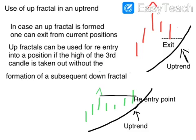We will now see the use of up fractals in an uptrend. When an up fractal is formed, you can see there are five bars shown. The middle bar has the highest high, while the two bars on the right and left sides have lower highs. Once an up fractal is found, the high of the third candle will act as resistance. If you have already entered and made a substantial profit, you can exit as soon as the fifth bar of the fractal is formed.